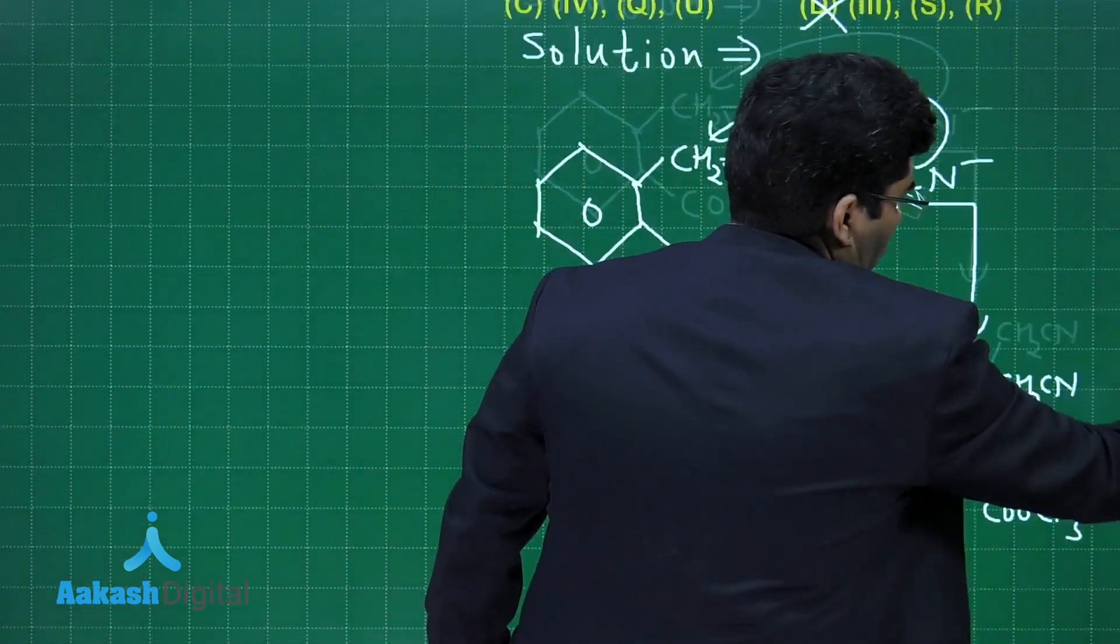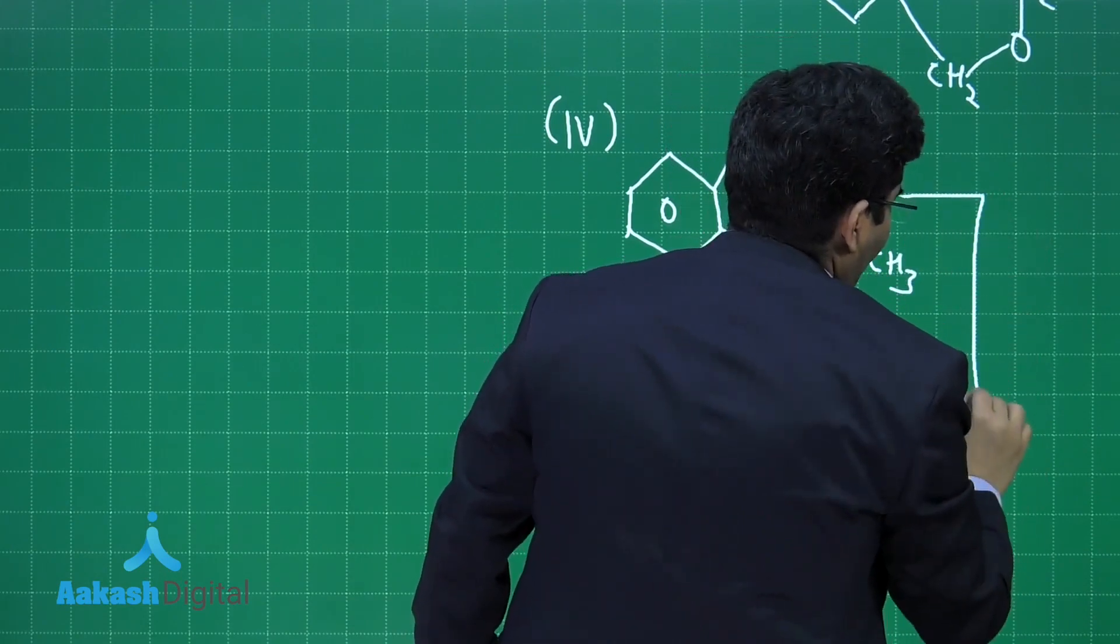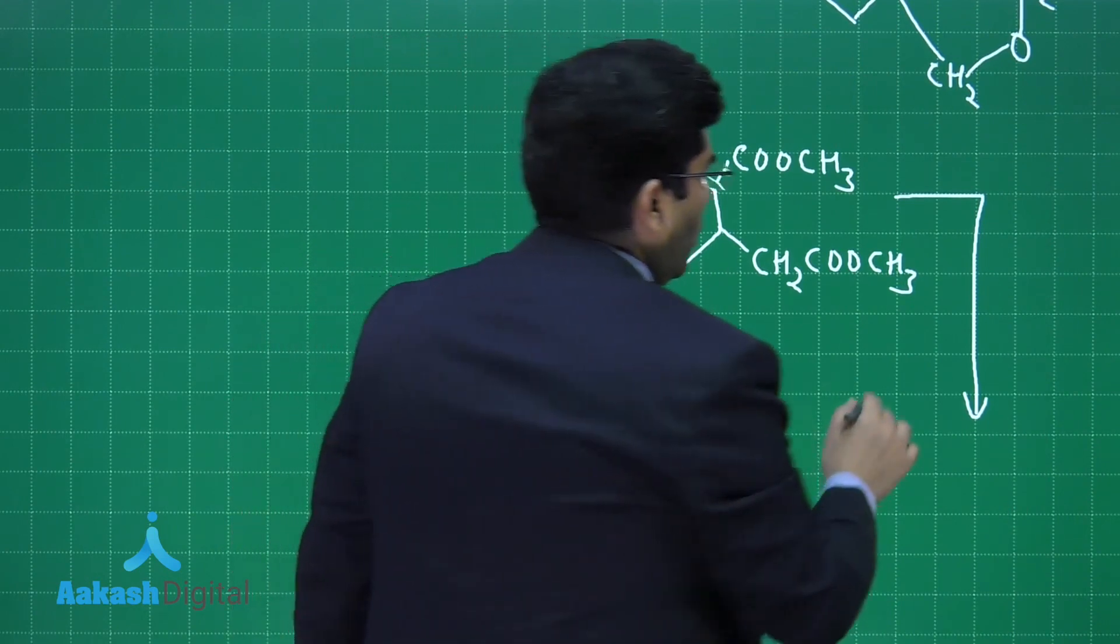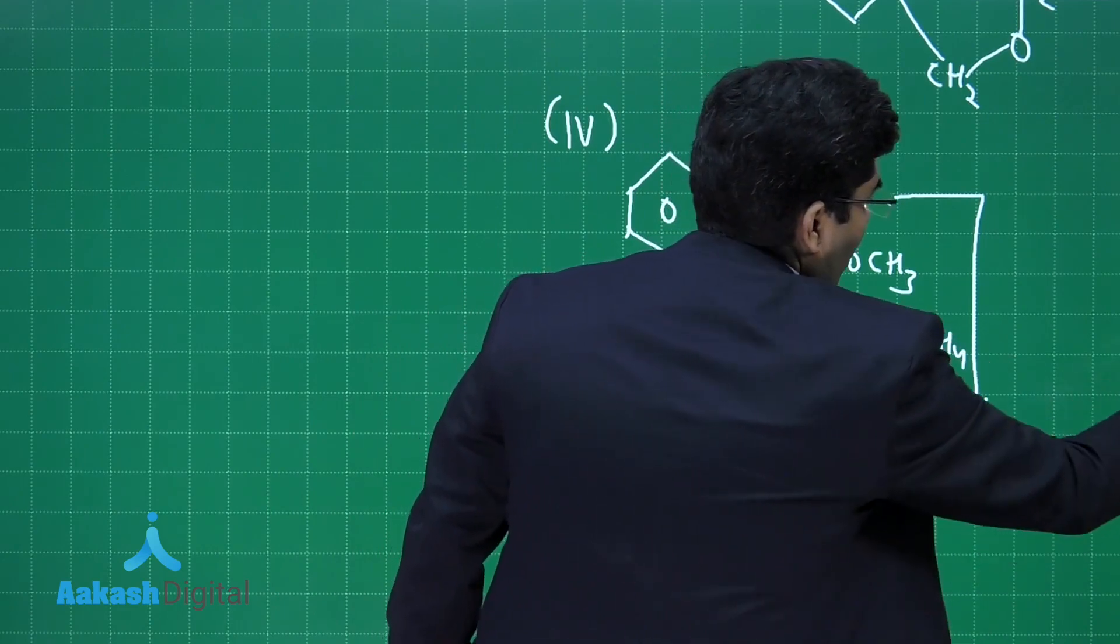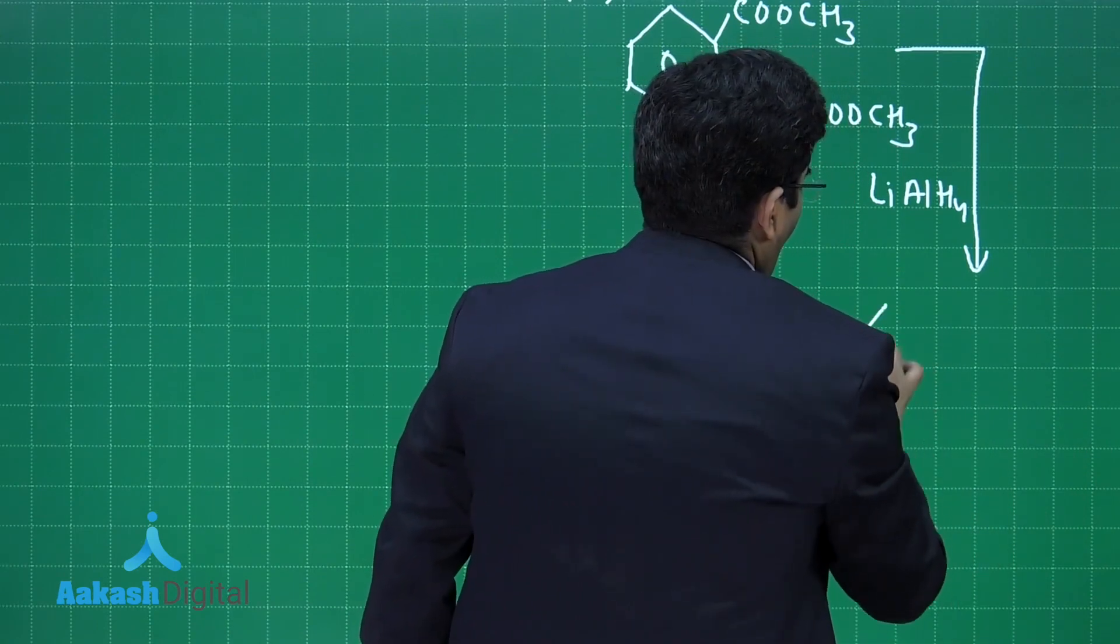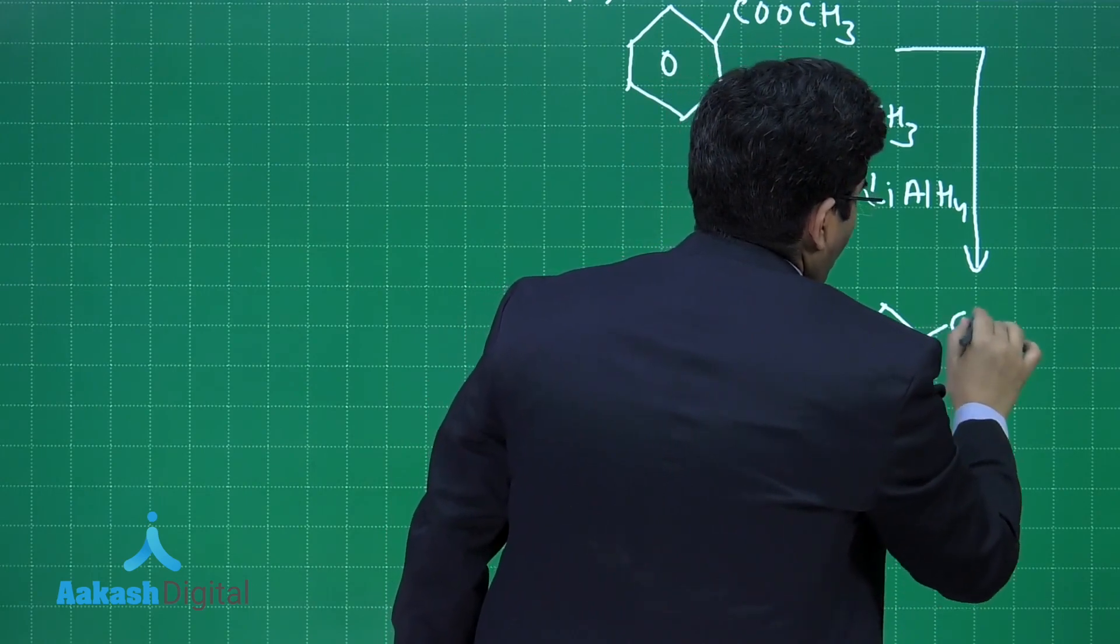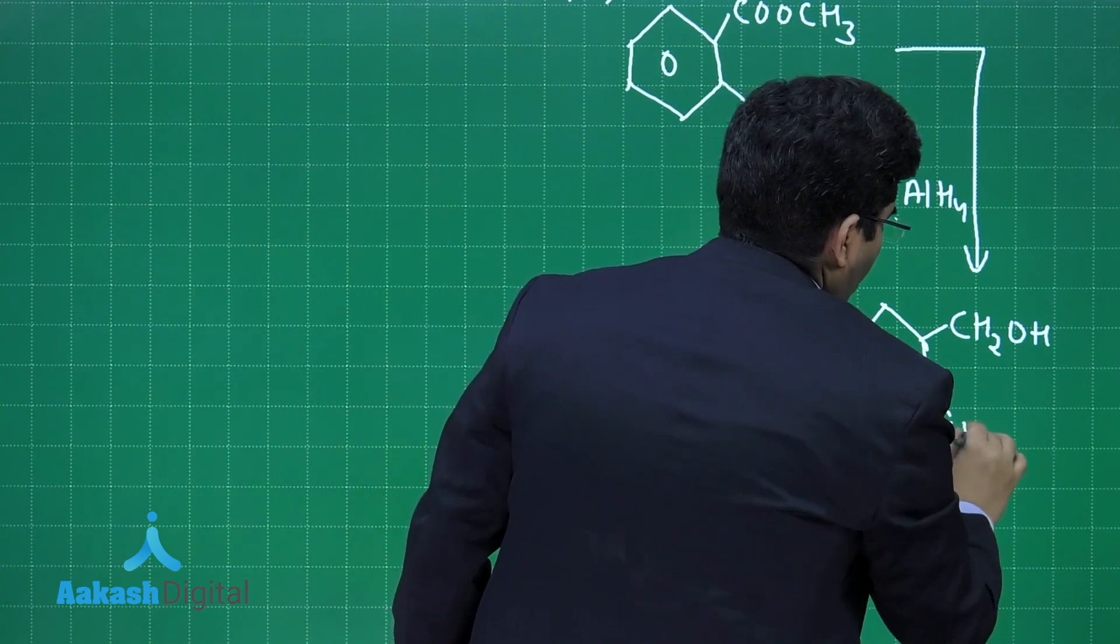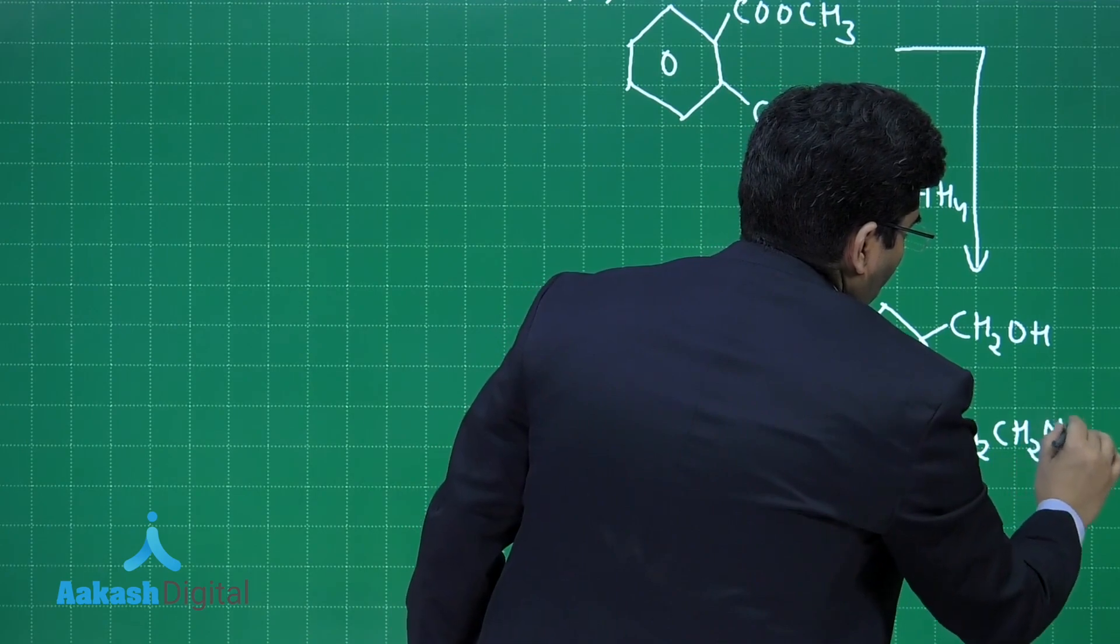First, LiAlH4 and we know that LiAlH4 is a very good reducing agent. If it is a very good reducing agent, then it will convert these esters to alcohol. Using LiAlH4, we will get the product in which it will be CH2OH and here it will be CH2OH.